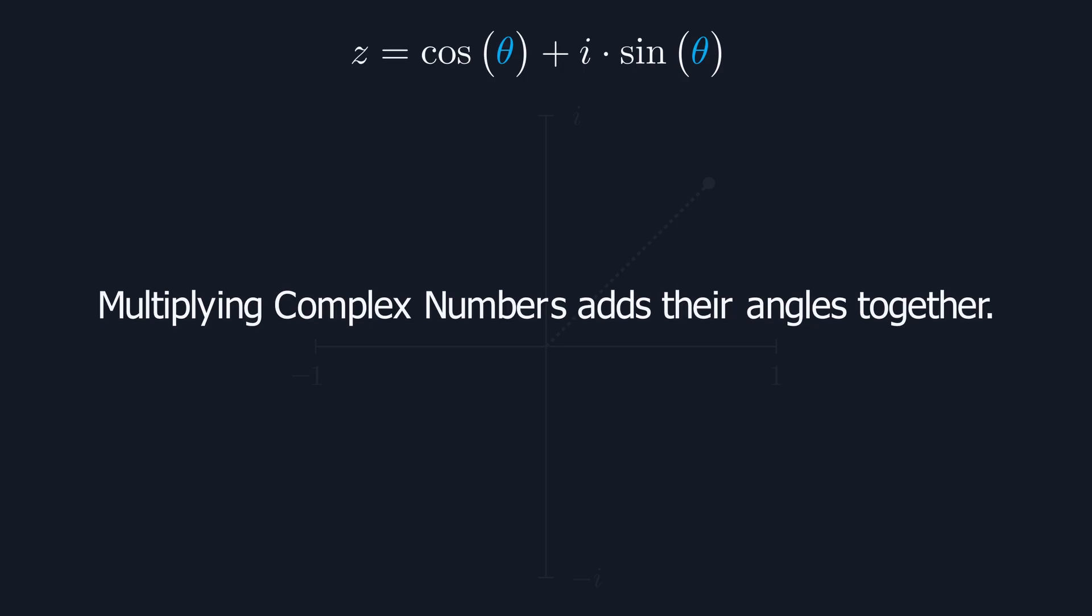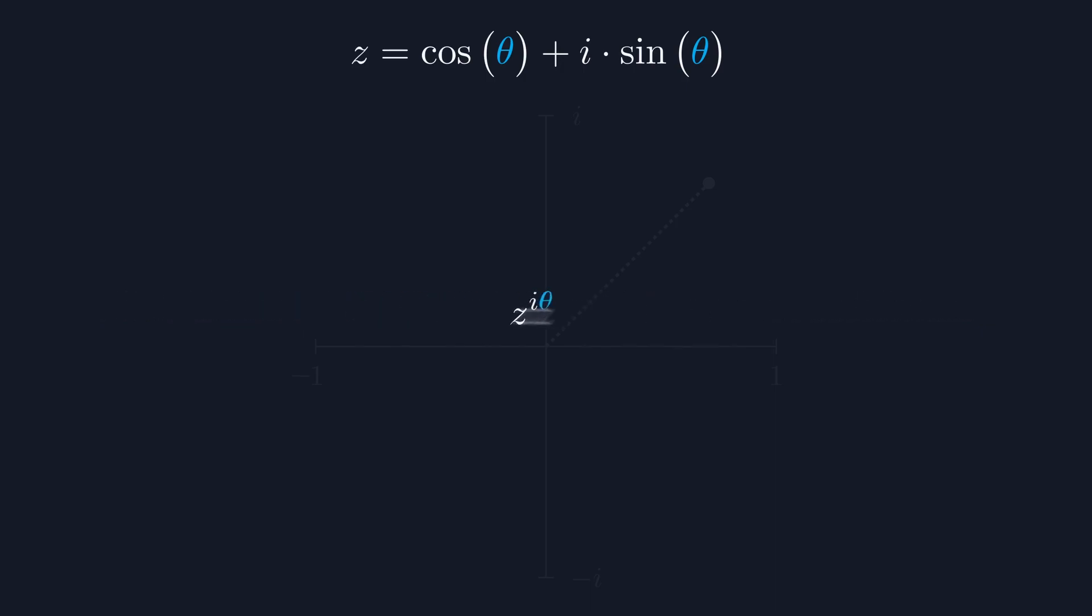They noticed that the multiplication leading to adding property was shared with the exponential formula, so they reasoned that a shorthand could look like this, some exponent to the power of i times theta. If this feels like an unnatural step, consider the way that exponents were extended to handle square roots. It was done so by maintaining the multiplying leads to adding the exponents property.